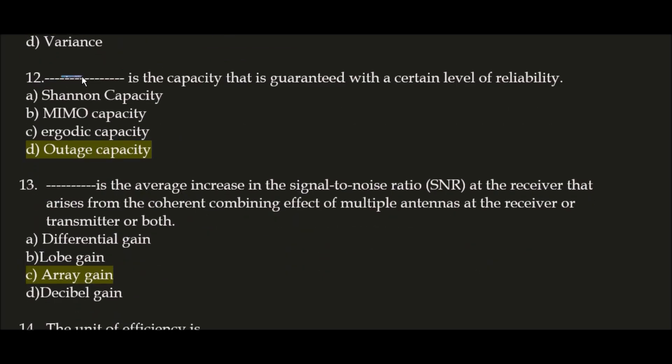Next question: blank space is the capacity that is guaranteed with a certain level of reliability. The correct answer is option D: outage capacity. Outage capacity is the capacity that is guaranteed with a certain level of reliability.